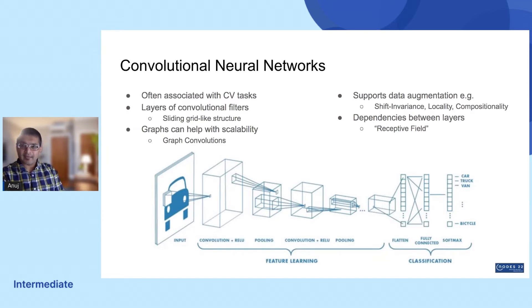Computer vision typically functions by analyzing an image, extracting features, and classifying outputs. CNNs work by applying layers of convolutional filters with a sliding grid-like structure. This tends to be particularly well suited for computer vision, because images can often be thought of as 2D grids themselves.